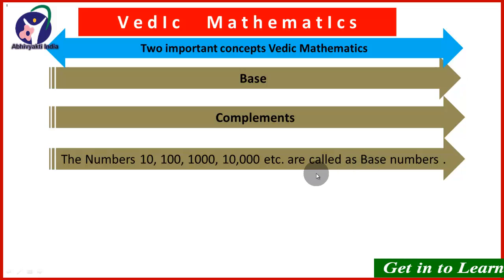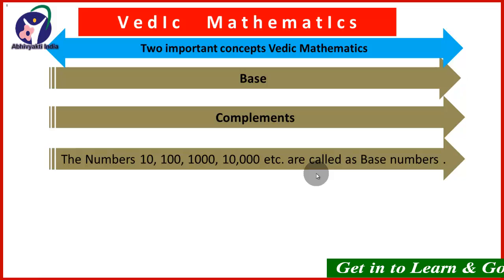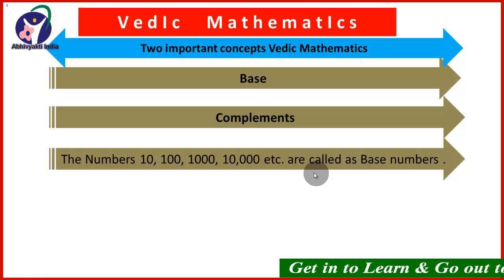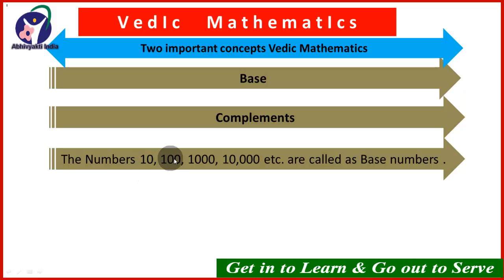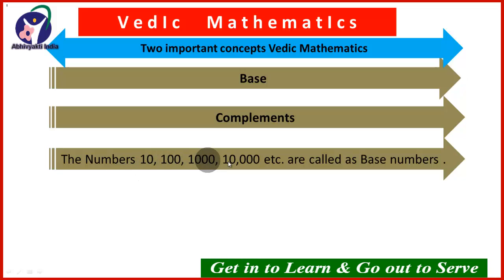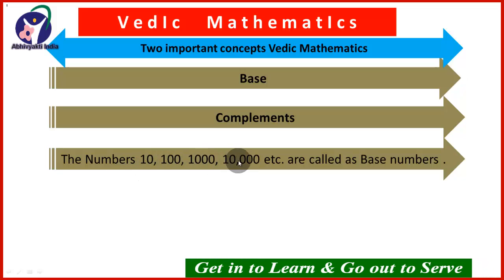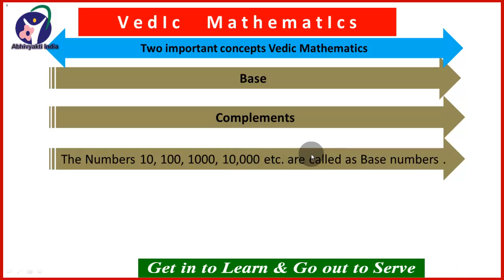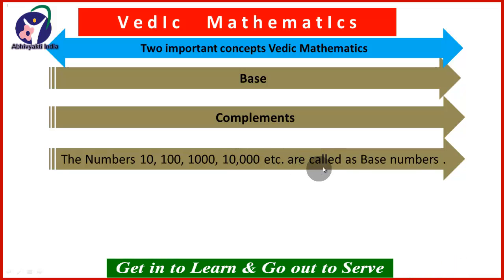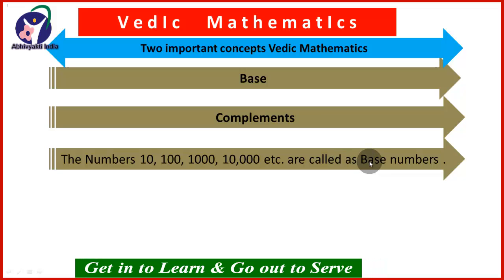Remember, these base numbers are very very important as far as Vedic Mathematics is concerned. Numbers like 10, 100, 1000, 10,000, 1,00,000, 10,00,000 and so on are called as the base numbers.